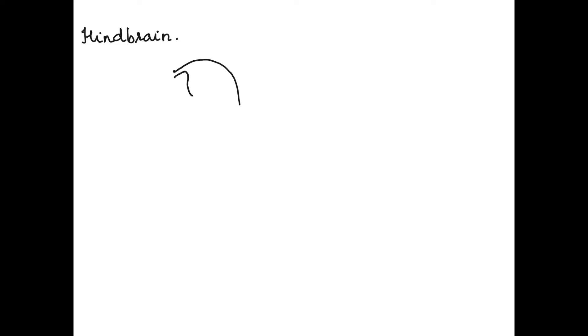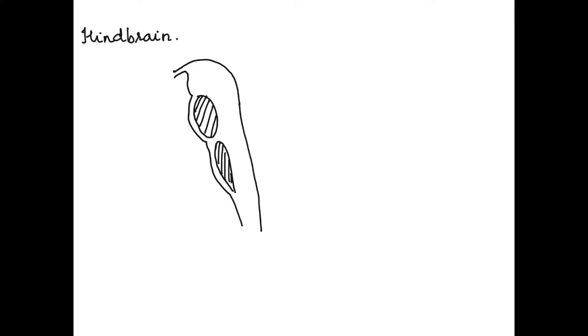In this video I am going to explain the parts of the hindbrain. We begin by drawing the tubular structure that is on the ventral side of the brain — posterior and ventral to the brain. This tubular structure is an extension of the brain stem, which consists of the pons and medulla oblongata.